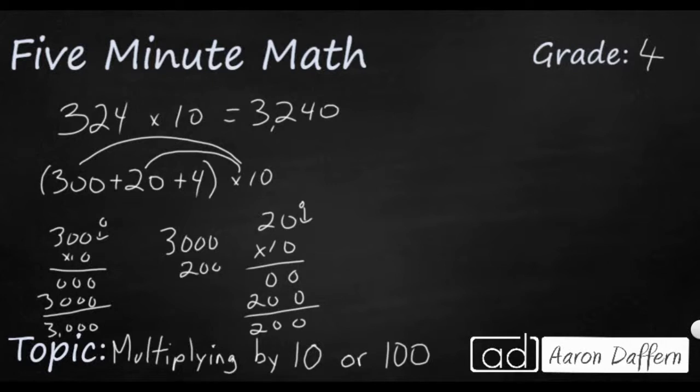And then if I wanted to do this last one, 4 times 10, that's a multiplication fact. We know 4 times 10 is 40. But look, 4 times 10 follows that same pattern, equals 4 with an extra 0.